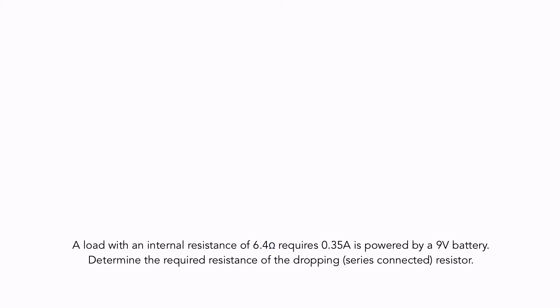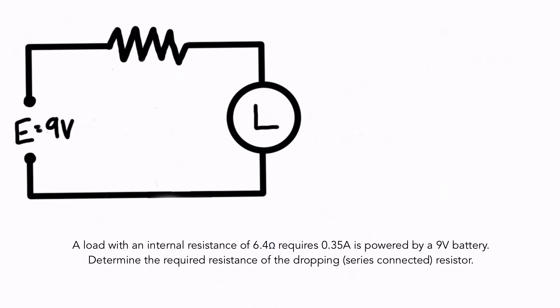So really what this is going to end up looking like will be something like this. We have a voltage source of 9 volts, our load is the circle with the L, and the resistor is up on the top there. Now voltage sources like this will put out any amount of current based on what's in the circuit. They will maintain their voltage of 9 volts, but depending on the resistances that it sees in the circuit, it'll put out a different amount of current.